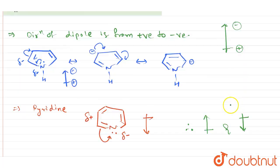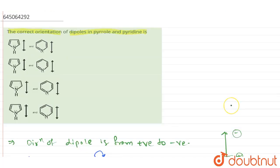So let's see the options. In option number one, pyrrole has dipole moment pointing upwards and pyridine has dipole moment pointing downwards. Therefore, option A is the correct answer. Thank you.